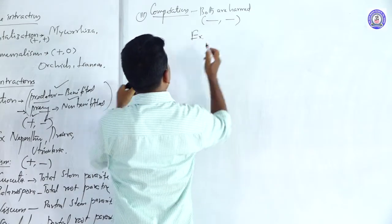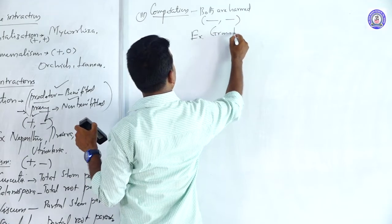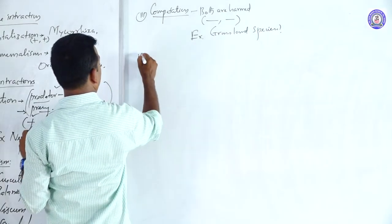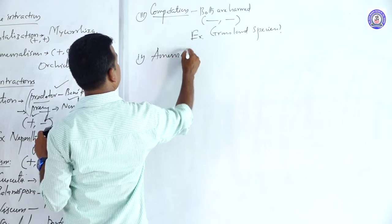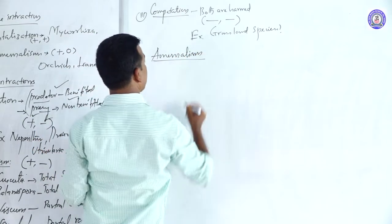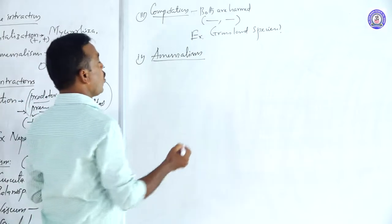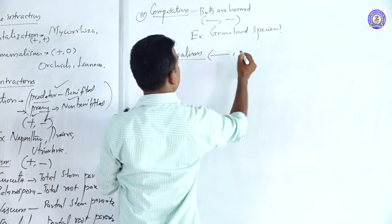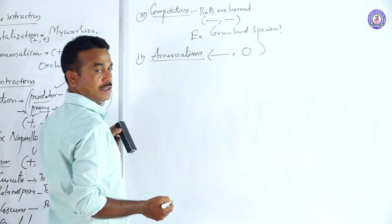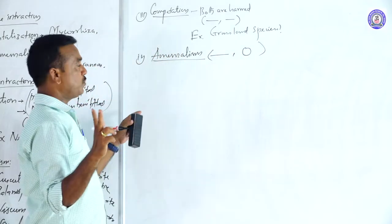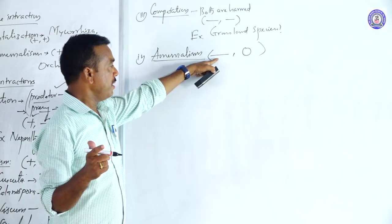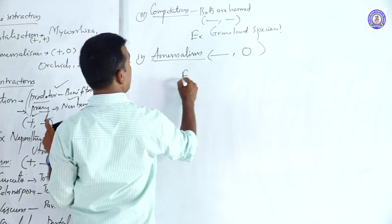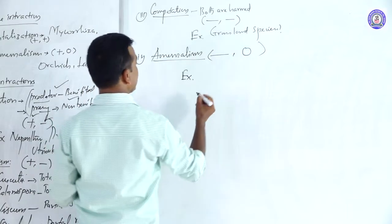An example of competition is grassland species. The fourth type of negative interaction is amensalism — the interaction of two species where one species is harmed and the other species is unaffected. Involvement of two species: one is harmed, another is unaffected — symbol: zero/minus.